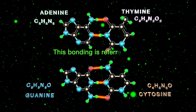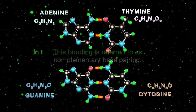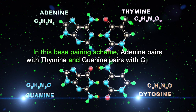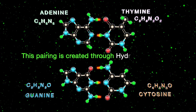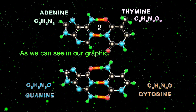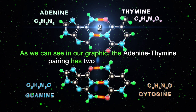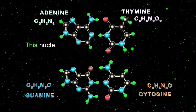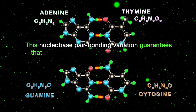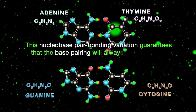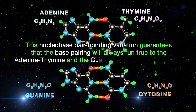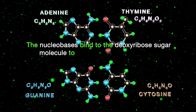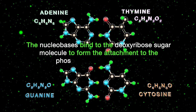The nucleobases are classified into two types: purines and pyrimidines. Adenine and guanine are purines; thymine and cytosine are pyrimidines. The purines have a two-loop structure; the pyrimidines have a single-loop structure. The nucleobases bond together in pairs to form the stair-step cross-sections of the DNA molecule. This bonding is referred to as complementary base pairing. In this base pairing scheme, adenine pairs with thymine and guanine pairs with cytosine. This pairing is created through hydrogen bonding.